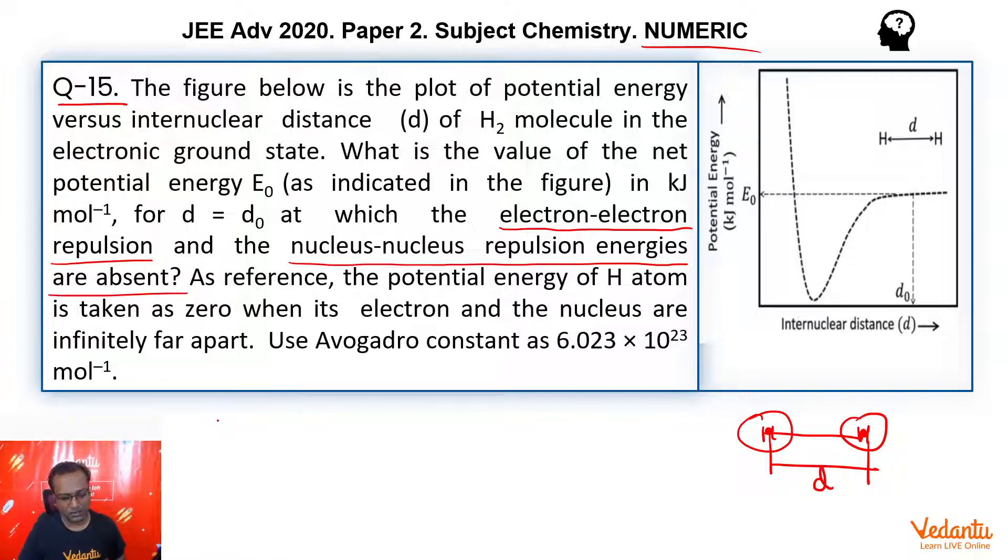So he is saying calculate energy E equal to E0 at D equal to D0 where repulsions are zero. Repulsions are zero.